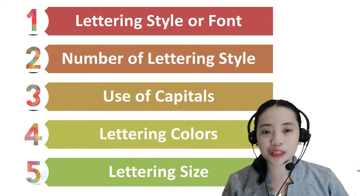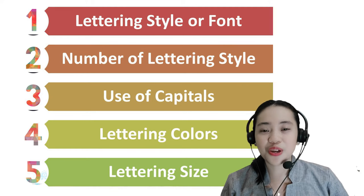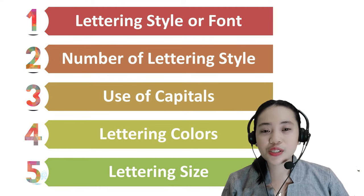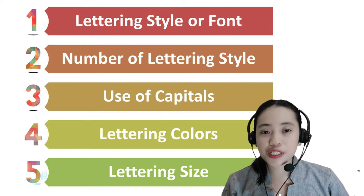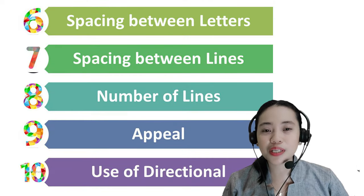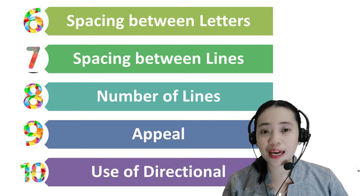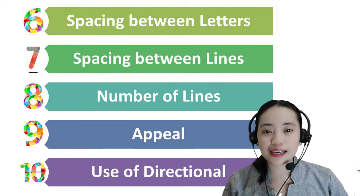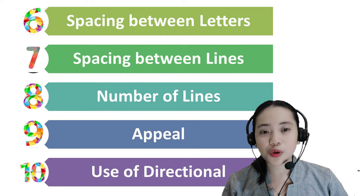Number three, the use of capitals: short titles or headlines should be no more than six words. Number four, lettering colors: easy to see and read, with use of contrast and good emphasis. Fifth, lettering size: good visibility even for students at the back of the classroom. Six, spacing between letters: equal and even spacing. Seven, spacing between lines: not too close or too blurry at a distance. Eight, number of lines: no more than eight lines in text of each transparency or slides.